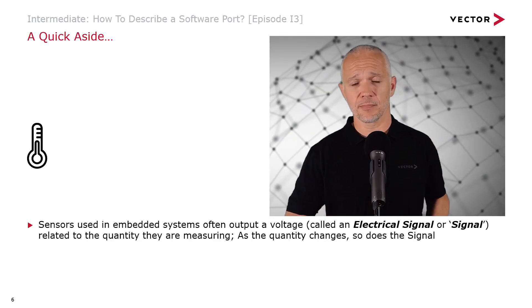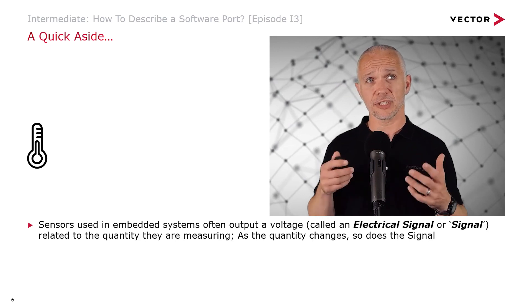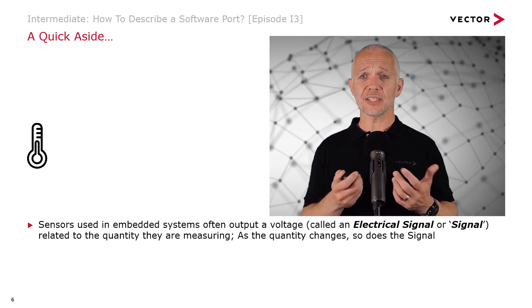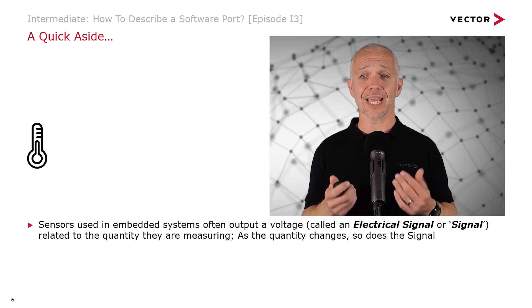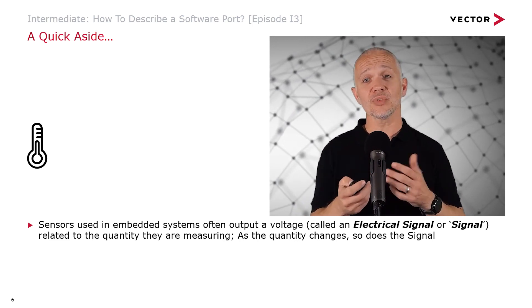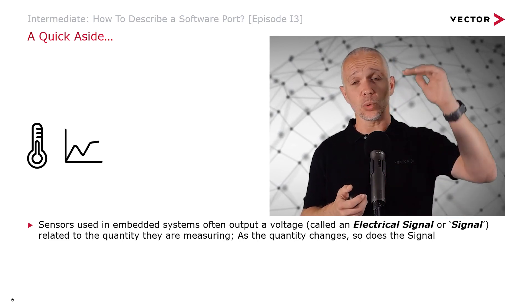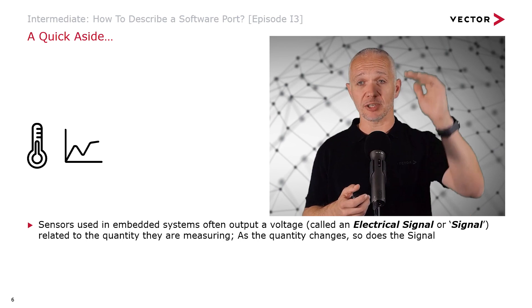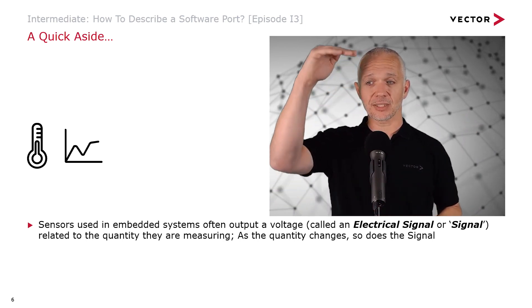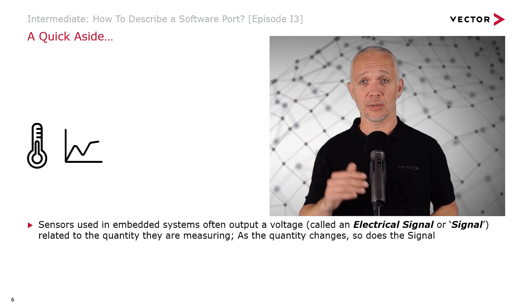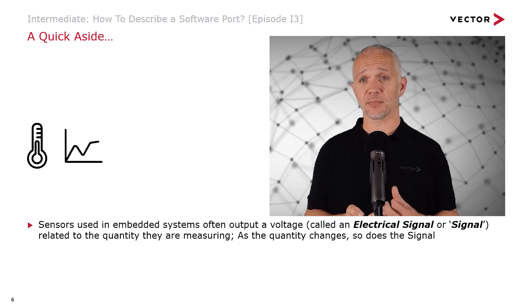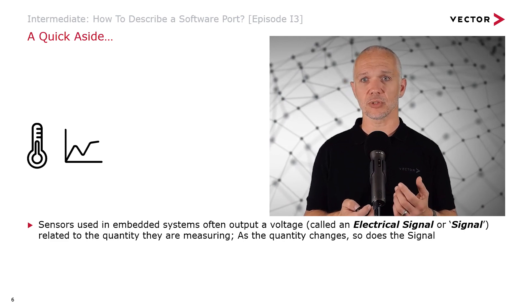Before we really get going, let's have a think about how information is traditionally used in embedded systems. Sensors that we use in embedded systems often output a voltage called an electrical signal, which relates to the quantity that they're measuring. As the quantity changes, the signal will change — the voltage will go up and down. So if we're measuring temperature, typically the higher the temperature the higher the voltage, and vice versa. This varying voltage is what we get from our sensor — our transducer, if you want to use a technical term.